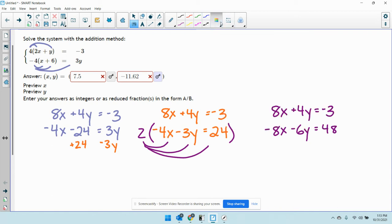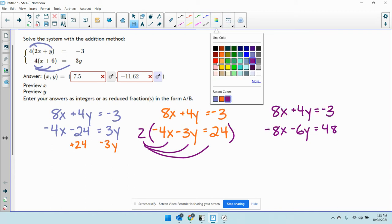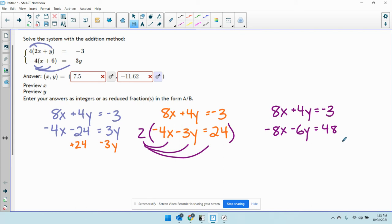Now, since I have this matching opposite coefficients, I can add the equations together. 8x and negative 8x, they're going to cross out, which is what we wanted. 4y and negative 6y is negative 2y equals 48 plus negative 3 is 45.